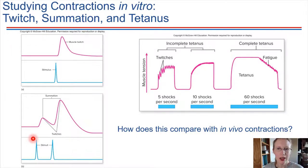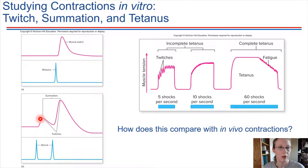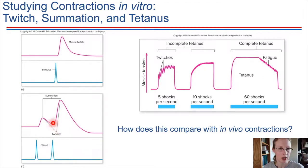If we apply two electrical shocks one after the other — first one, then the second — the contractions can actually piggyback on each other. If the first contraction hadn't quite ended, the second stimulation causes an even stronger contraction; they add together. This is called summation — contractions can sum together.